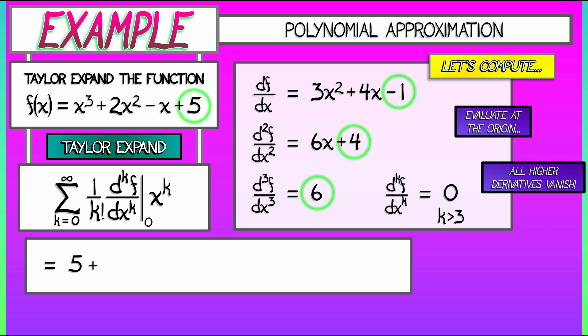Next, we take the first derivative, negative 1, times x, then 1 over 2 factorial times the second derivative, 4, times x squared, then 1 over 3 factorial times the third derivative at 0, 6, times x cubed, and then all the other terms are going to vanish. Yes, this is an infinite series, but in this case, most of the terms are 0.